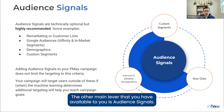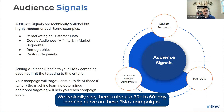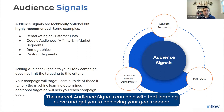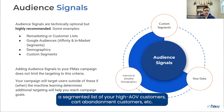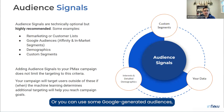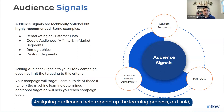The other main lever available to you is audience signals. Audience signals are used to help speed up the learning process of your Performance Max campaign. We typically see a 30 to 60 day learning curve on PMax campaigns, and the correct audience signals can help with that. Audience signals can include custom audiences like past customers, segmented lists of high-AOV customers, cart abandonment customers, or Google-generated audiences like similar audiences to your best customers or in-market audiences for your vertical.